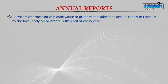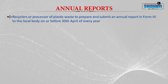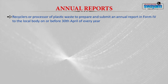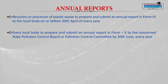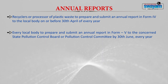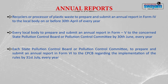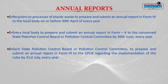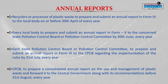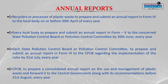Regarding annual reports: recyclers or processors of plastic waste are to prepare and submit an annual report in Form 4 to the local body on or before 30th April every year. Every local body is to prepare and submit an annual report in Form 5 to the concerned State Pollution Control Board by 30th June every year. Each State Pollution Control Board is to prepare and submit an annual report in Form 6 to the Central Pollution Control Board by 31st July every year. The Central Pollution Control Board is to prepare a consolidated annual report on plastic waste management and forward it to the central government along with its recommendations before 31st August every year.